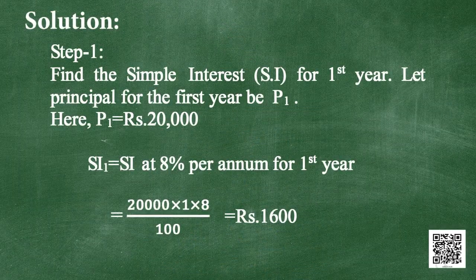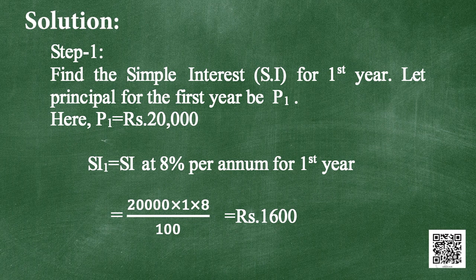Step 1: Find the simple interest for the first year. Let the principal for the first year be P1 = rupees 20,000. SI1, the simple interest at 8% per annum for the first year, using the formula PTR/100 = 20,000 multiplied by 1 multiplied by 8, divided by 100 = rupees 1,600.